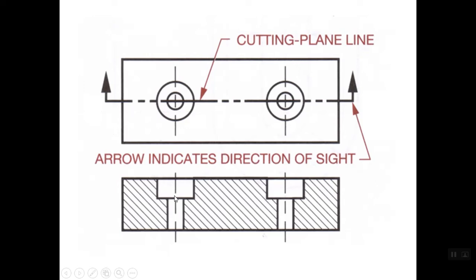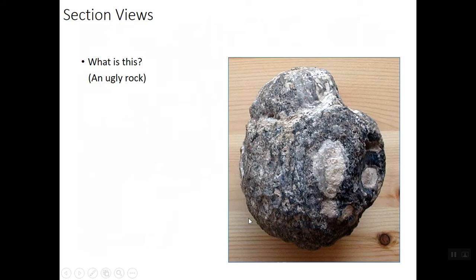Well, we would see where it was solid metal. We'd see where it was hollow. So the hollow areas are just outlined, but the solid areas have these thin section lines added.